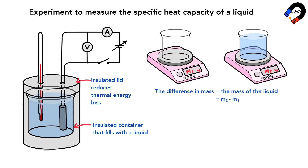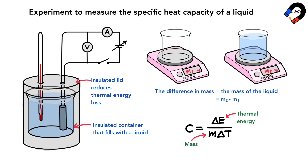The specific heat capacity is calculated using the equation c = ΔE / (mΔT), where ΔE is the thermal energy added to the liquid, m is the mass of the liquid, and ΔT is the change in temperature.